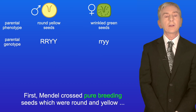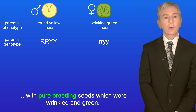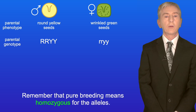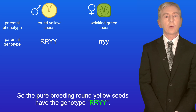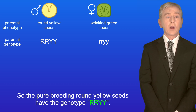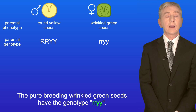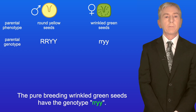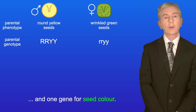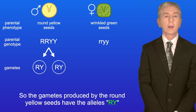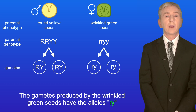First, Mendel crossed pure breeding seeds which were round and yellow with pure breeding seeds which were wrinkled and green. Pure breeding means homozygous for the alleles. So the pure breeding round yellow seeds have the genotype capital R, capital R, capital Y, capital Y. And the pure breeding wrinkled green seeds have the alleles lowercase r, lowercase r, lowercase y, lowercase y. The gametes will have one gene for seed shape and one gene for seed color. So the gametes produced by the round yellow seeds have the alleles capital R, capital Y, and the gametes produced by the wrinkled green seeds have the alleles lowercase r, lowercase y.